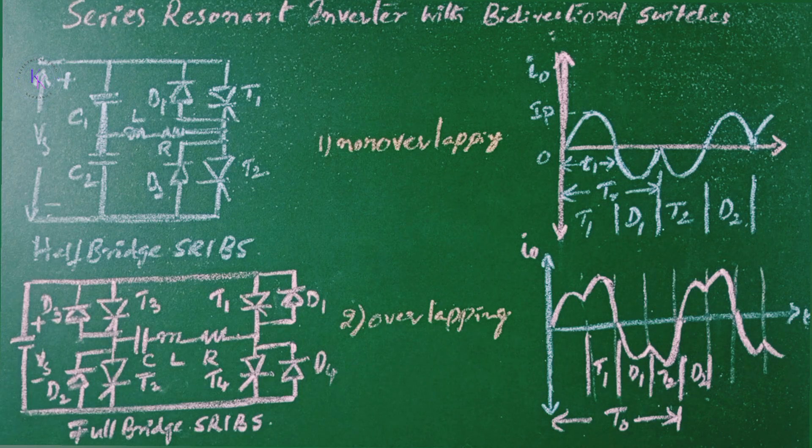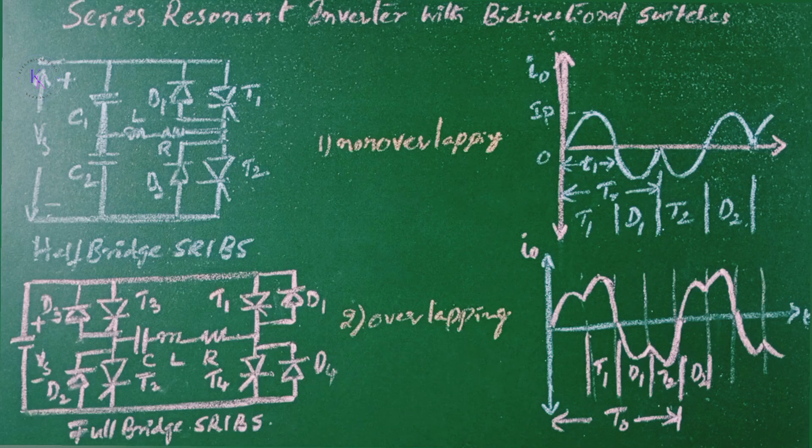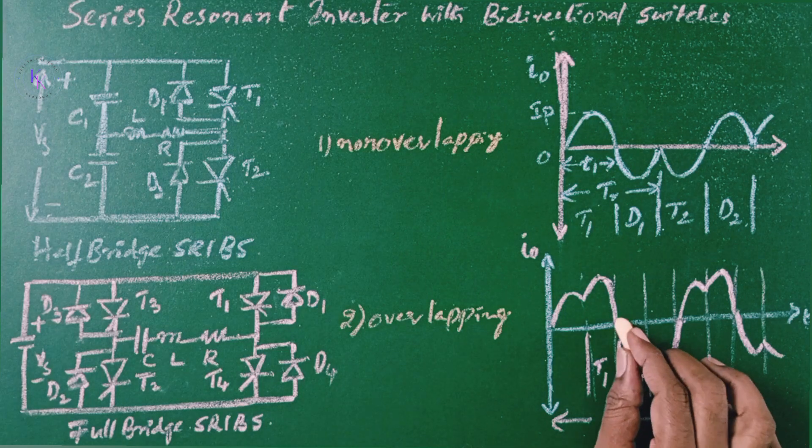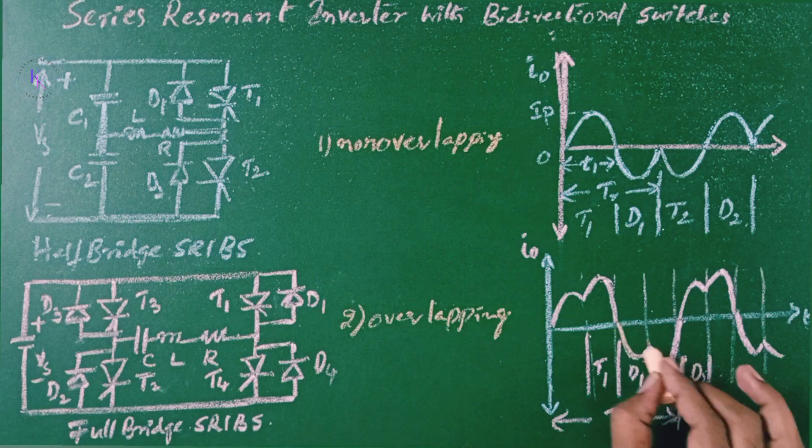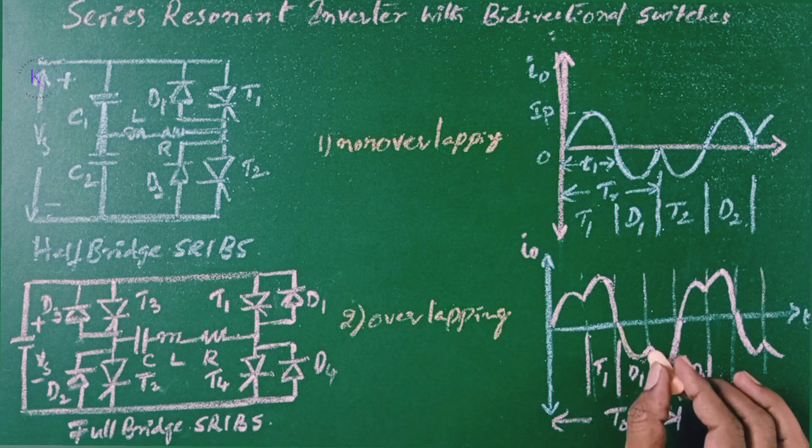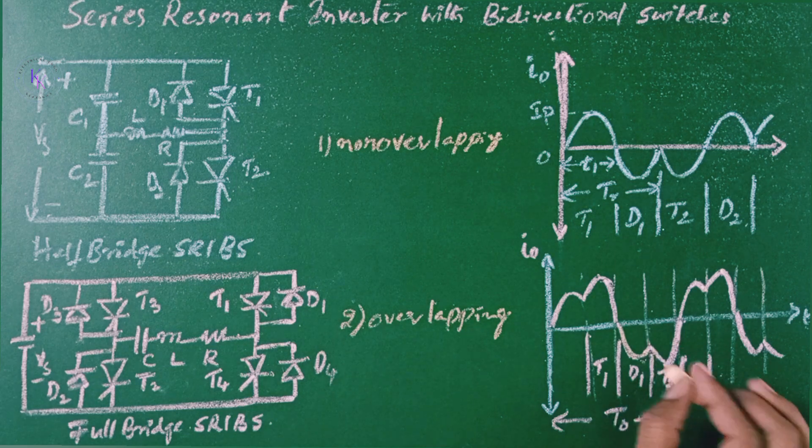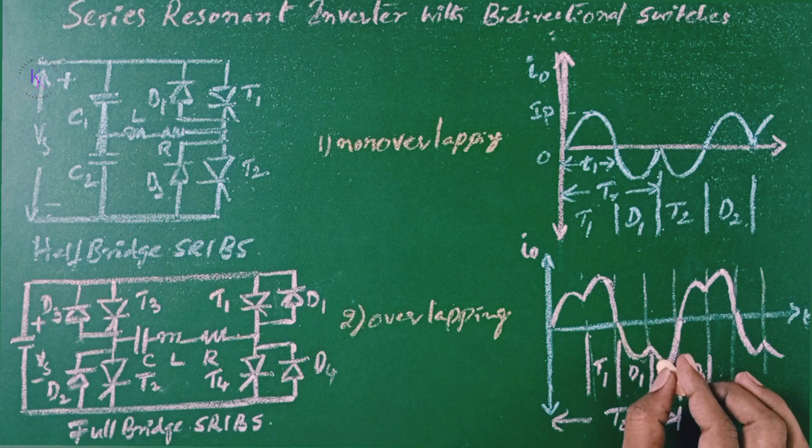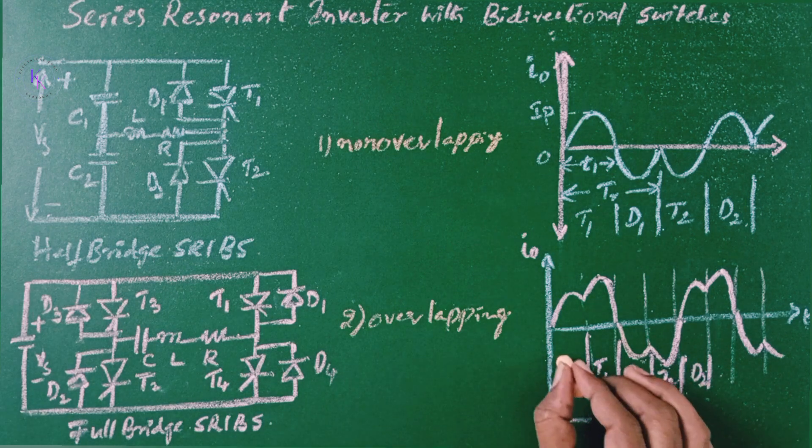In overlapping mode, the thyristor is fired while the current in the diode of the another part is still conducting. You can observe that this is the current path while D1 is conducting and it is not came to zero before that T2 is turned on. So, this is overlapping the conduction period of D1. The similar thing is going to happen here.